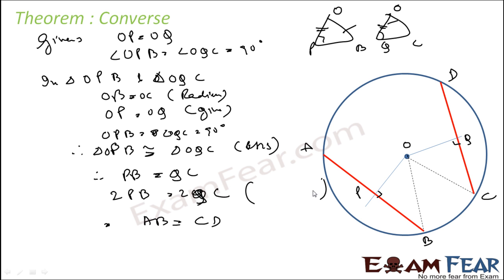Because the line from the center perpendicular to the chord will bisect the chord, with that converse theorem we can say that twice of PB is equal to AB and twice of QC is equal to CD. Thus, AB is equal to CD — these two chords are equal. So, given that two chords are equidistant from the center, it implies that these two chords are equal in length.